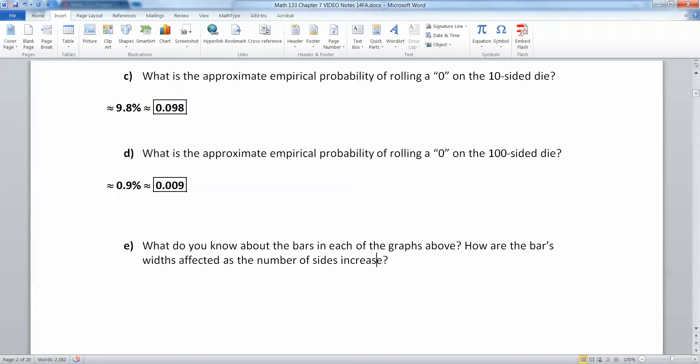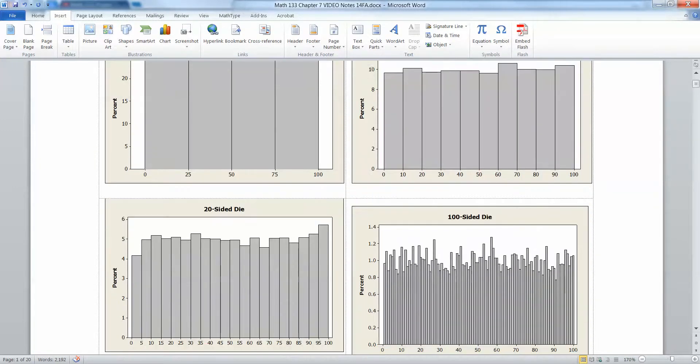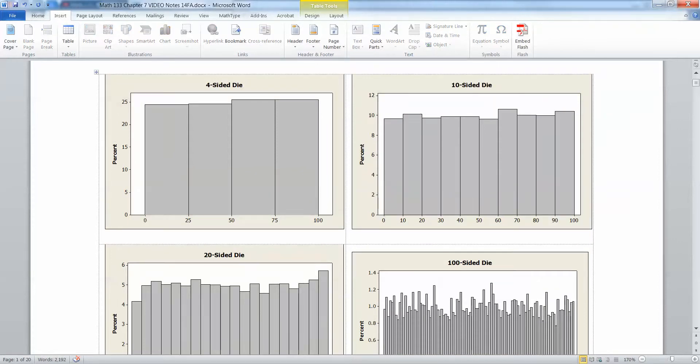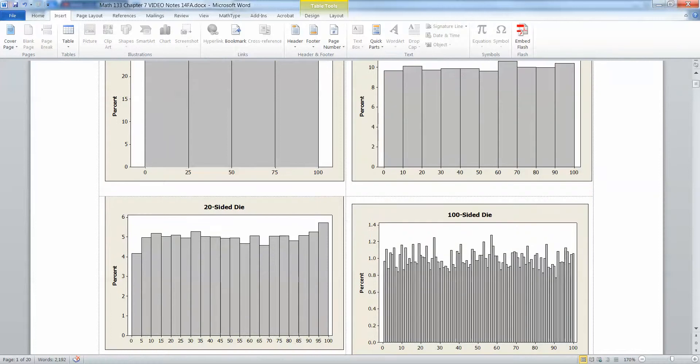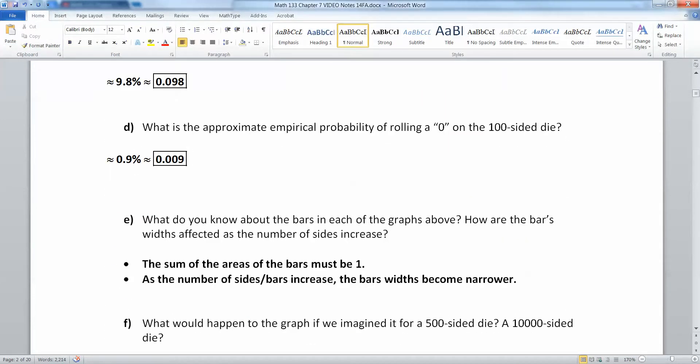Now, what do you know about the bars of each of the graphs above? How are the bars affected as the number of sides increases? We know because these are probability distributions that in each one of these four graphs, the probabilities must add to 1. So the bar areas must sum to 1. And you'll notice as the number of sides is increasing, the bars are getting narrower and narrower. As the number of sides or bars increase, the bar widths become narrower and smaller and smaller.